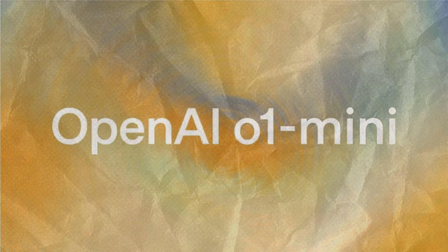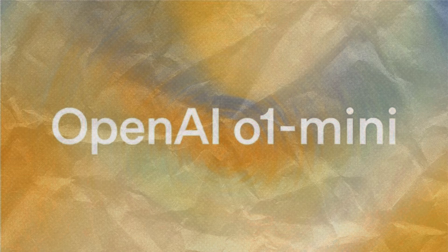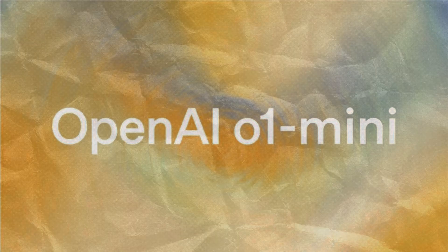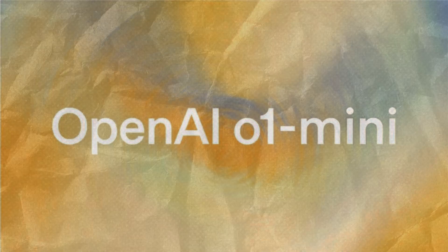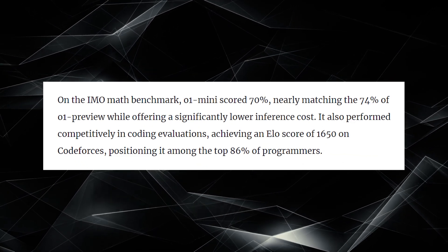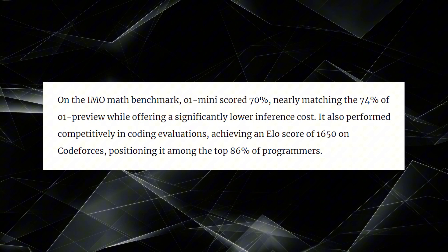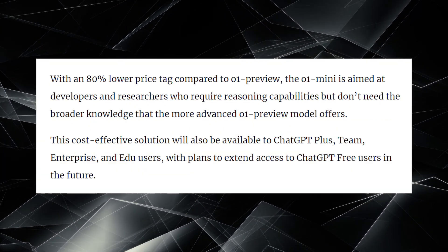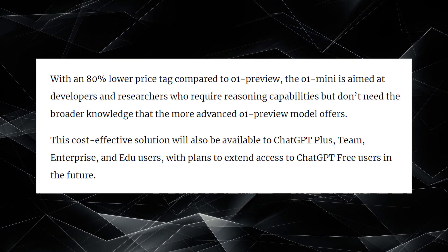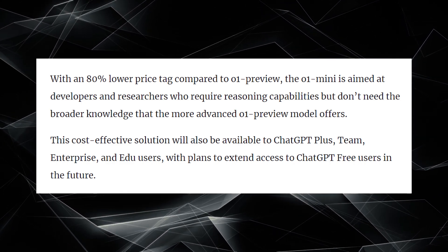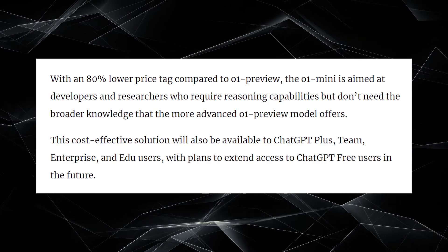Now, let's talk about Zero-One mini. While it's not as powerful as its big brother, Zero-One preview, it still holds its own, especially in coding and math tasks. It scored 70% on the IMO benchmark, which is still impressive, especially considering it's 80% cheaper. This makes Zero-One mini a more accessible option for developers and researchers who need a powerful AI, but are working with limited resources.